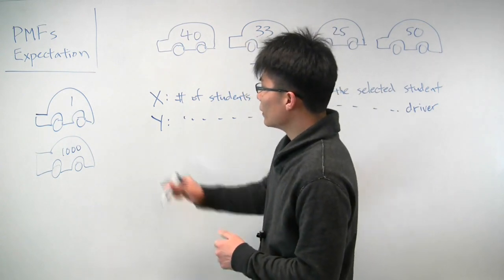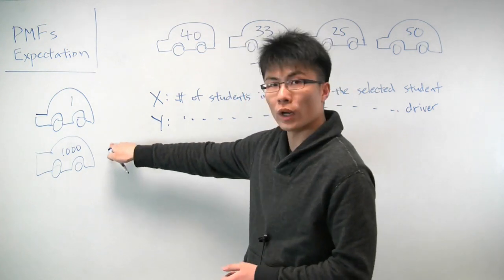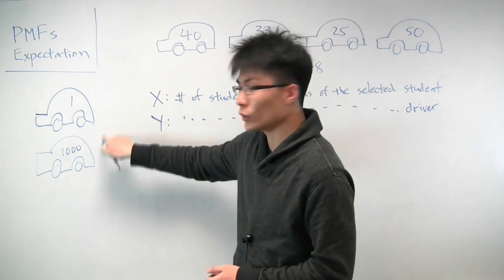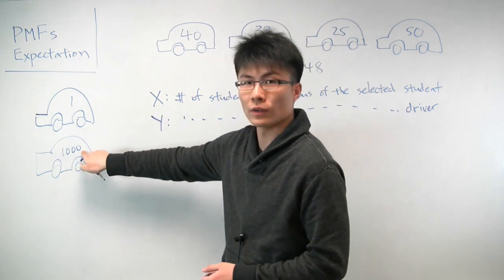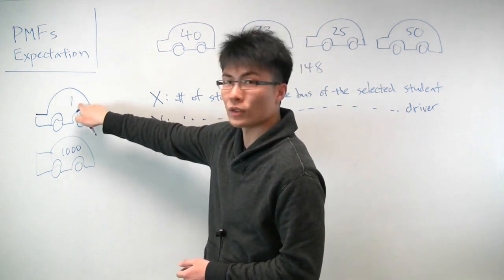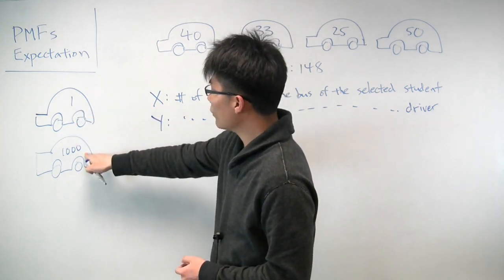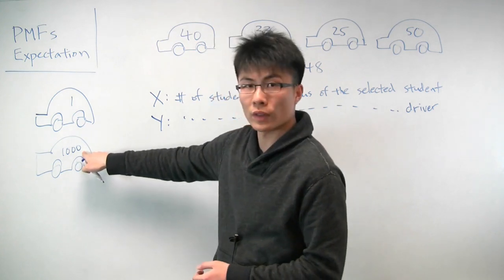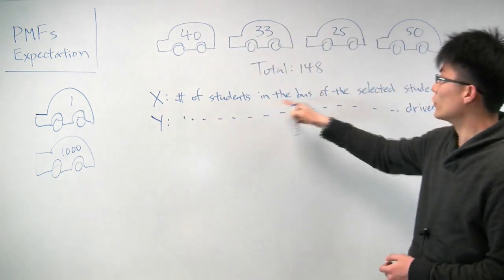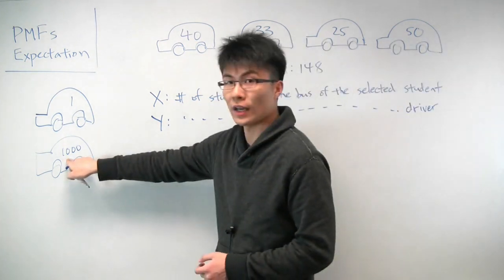Suppose we ask the same question. Well, now if you look at it, if you select, there's a total of 1,001 students now. If you select one of the students at random, it's overwhelmingly more likely that that student will be one of the 1,000 students on this huge bus. It's very unlikely that you'll get lucky and select one student who is by himself. And so because of that, you have a very high chance of selecting the bus with the high number of students. And so you would expect x, the number of students, to be high, to be almost 1,000 in the expectation.